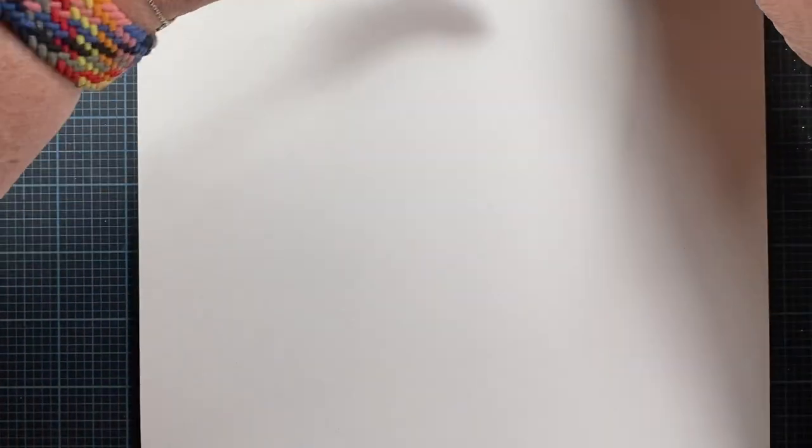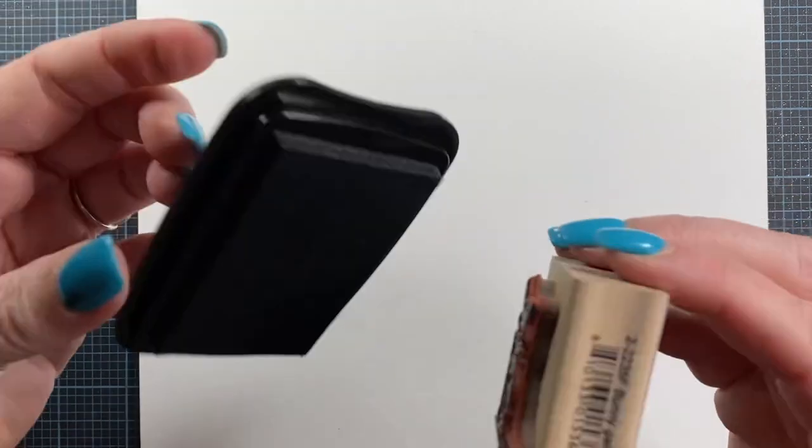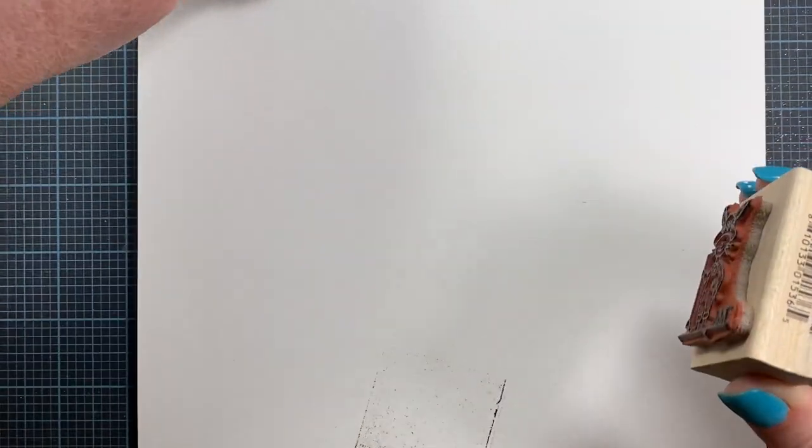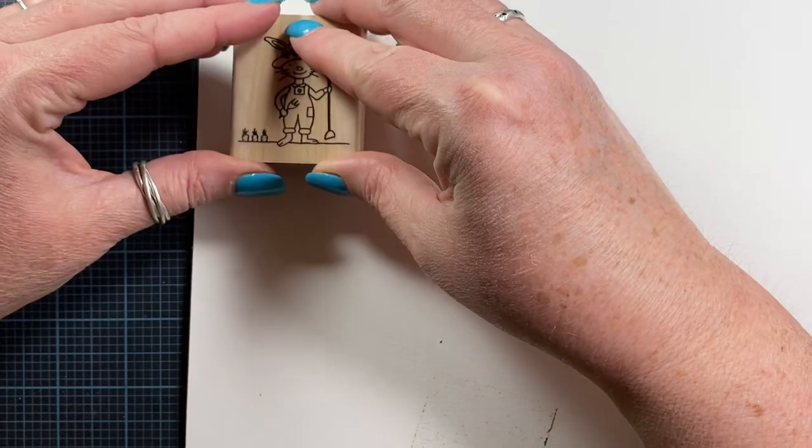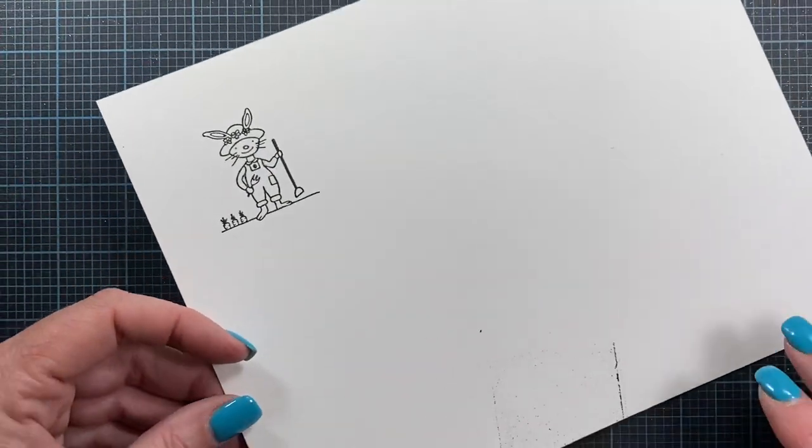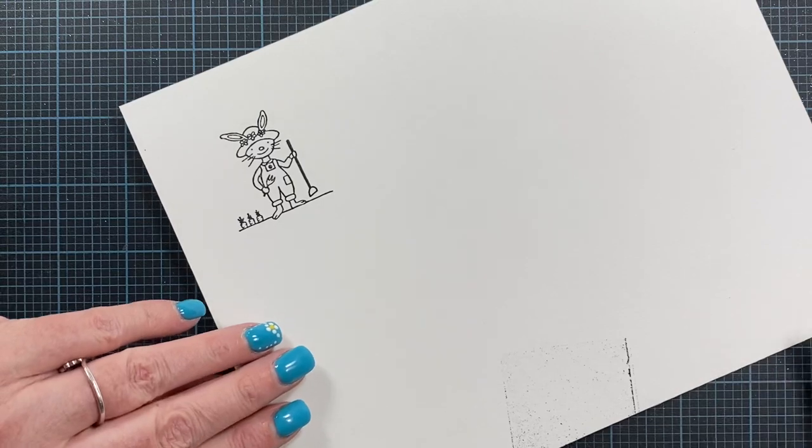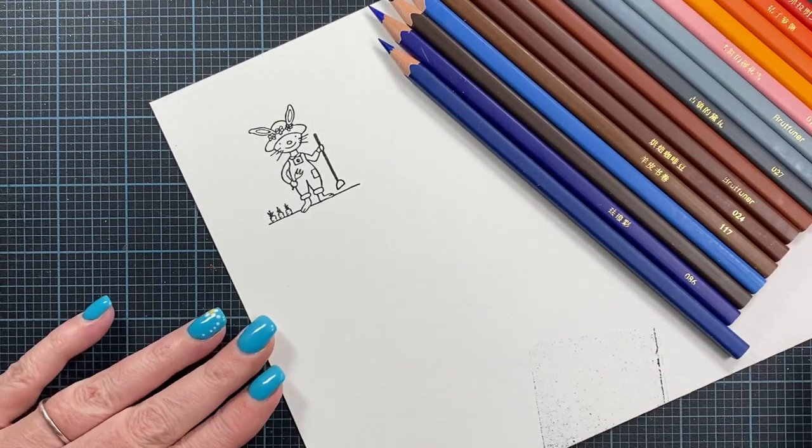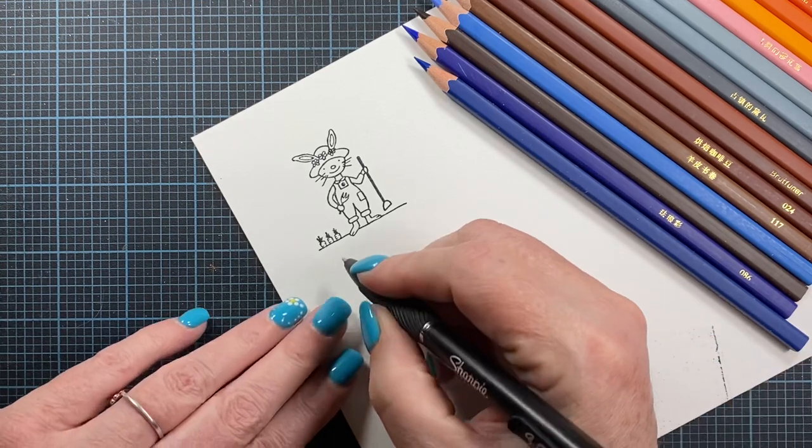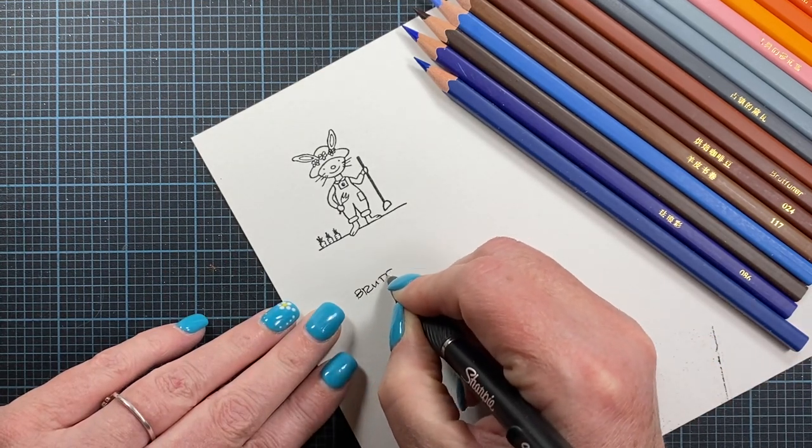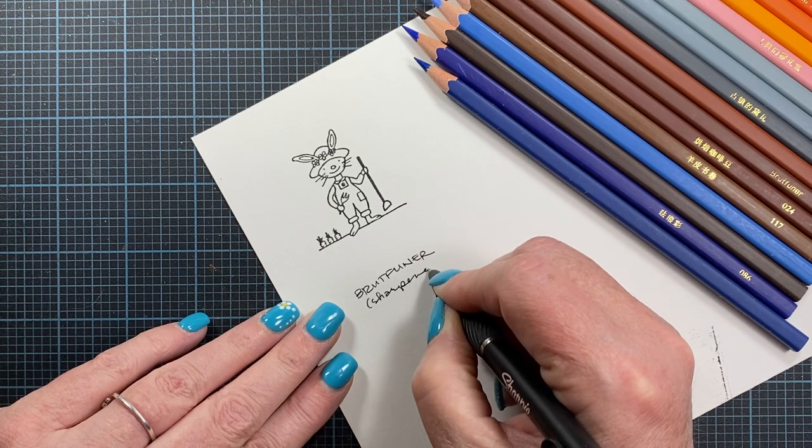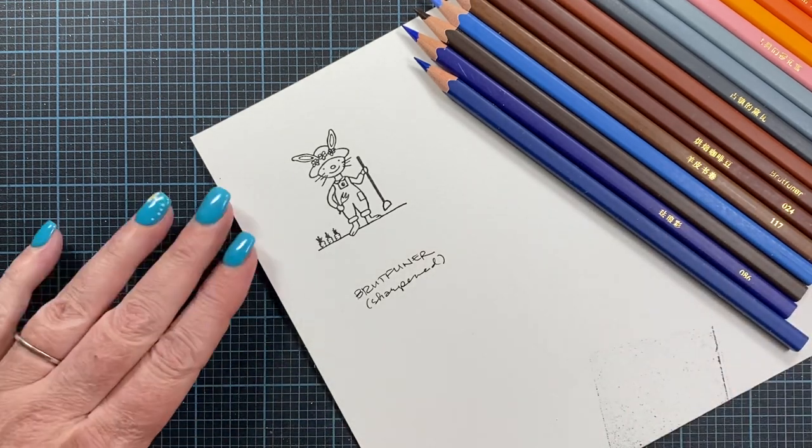So let me go ahead and stamp another image here. Oh no! Danger! I dropped the ink pad. We'll stamp the image here and get to coloring. Awesome. And as always, if you hear noise in the background, it's just Oliver having a party. So I'm going to put on here that these are the Brutfurners. Sharpened. All right.